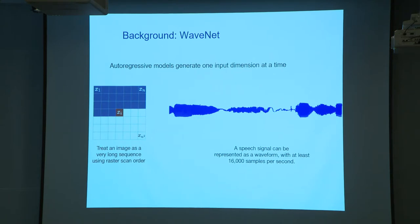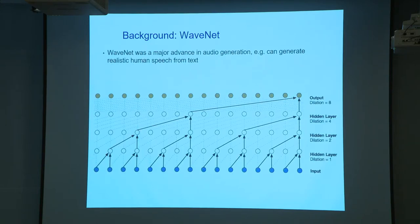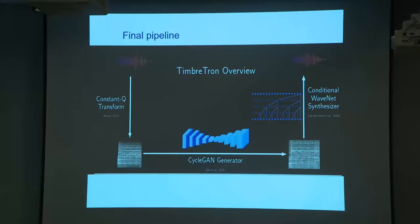To solve the reconstruction bottleneck, we use a variant of WaveNet. WaveNet has been proven to be a good architecture for generating waveforms from human speech, and it's an autoregressive model that generates one data dimension at a time. In the final pipeline, instead of STFT we use CQT, generate the target audio via CycleGAN, and then reconstruct back to the waveform using WaveNet conditioned on the CQT spectrum.